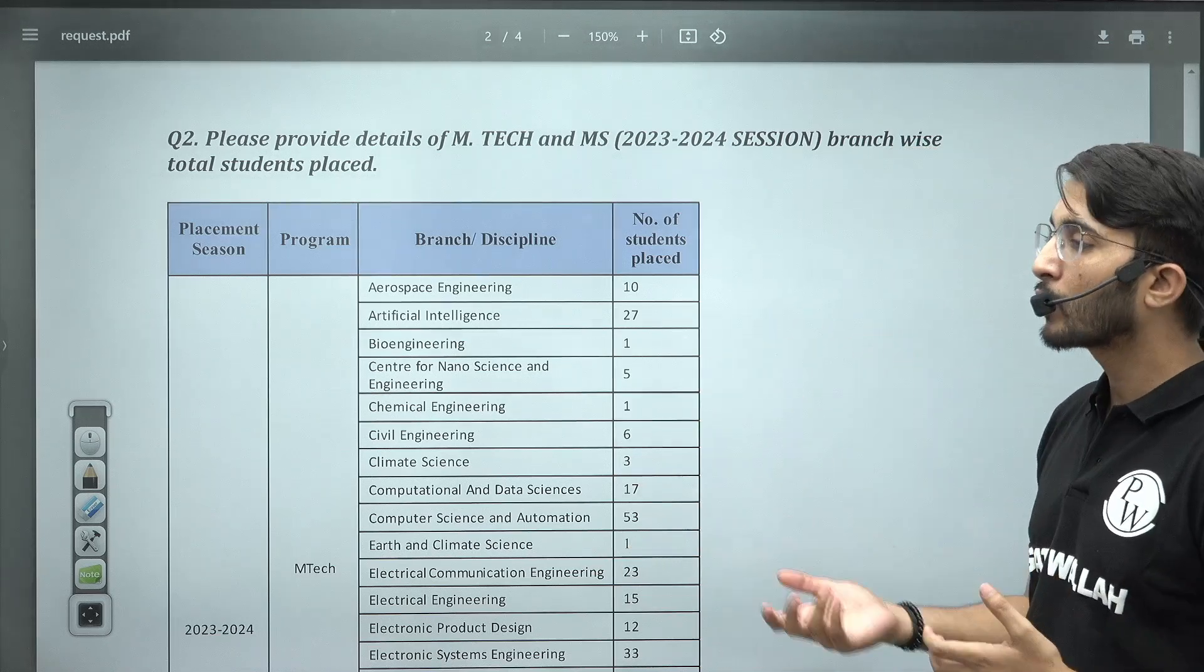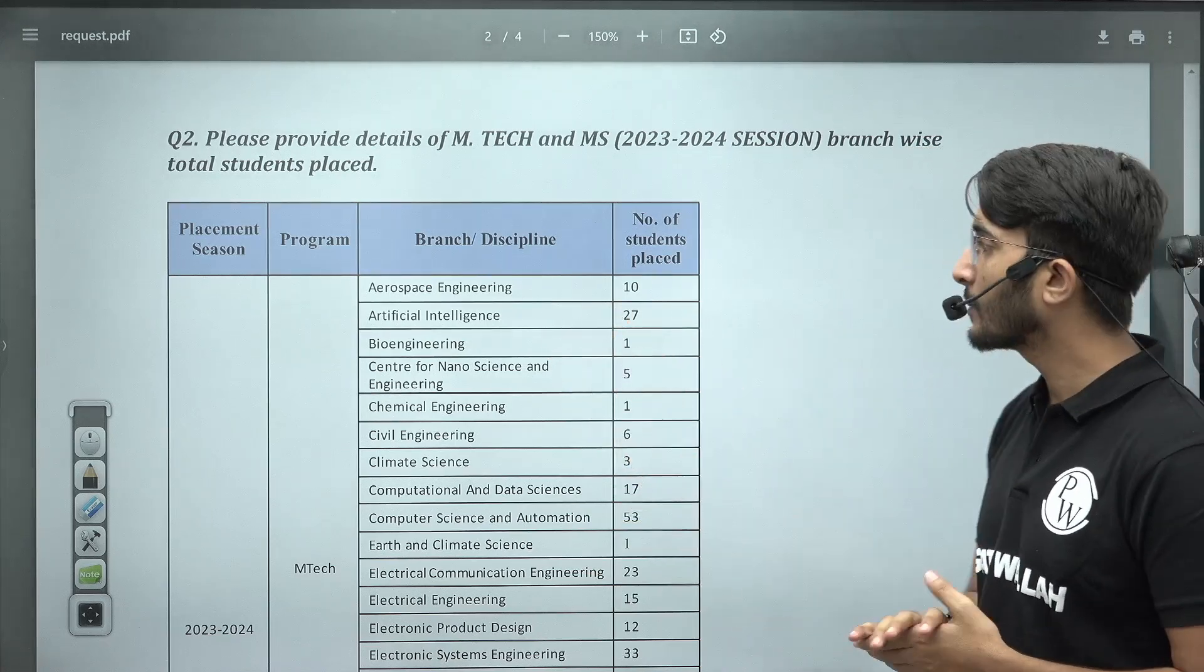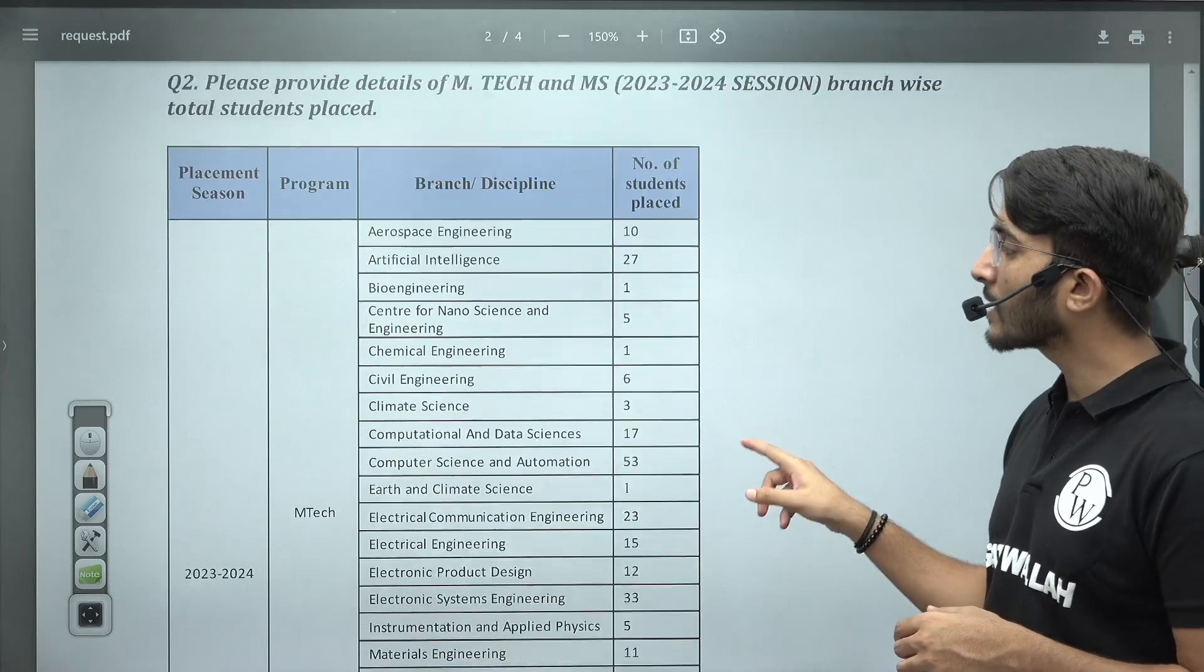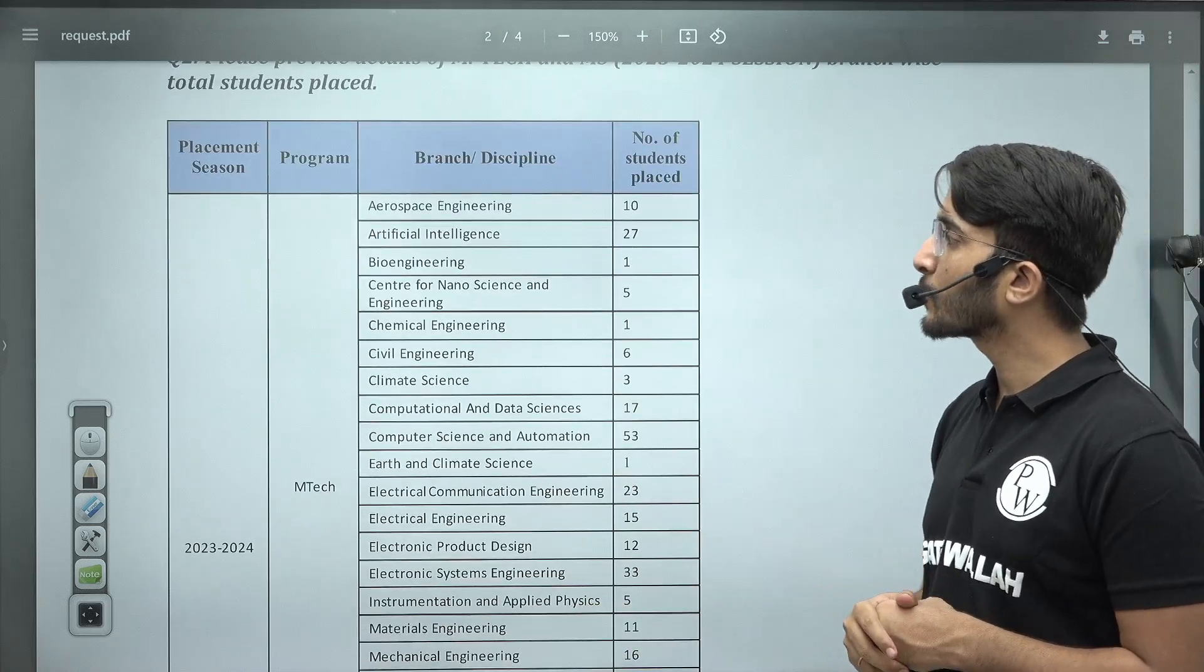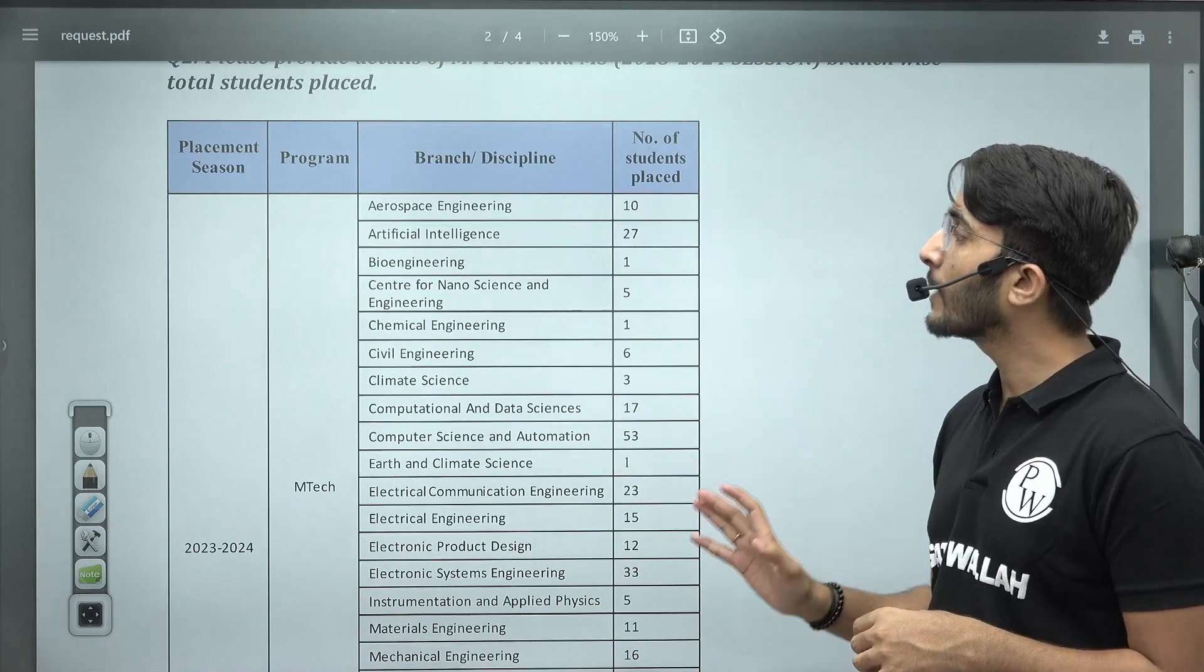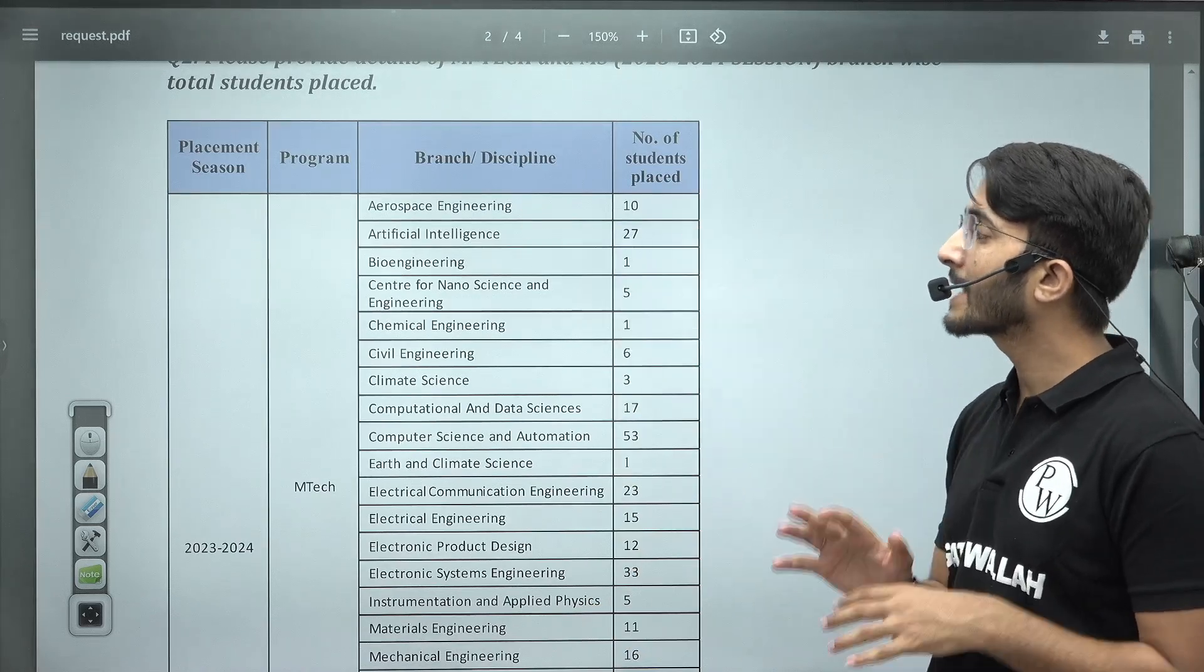And guys, in this particular answer they provided the number of students placed. So for Aerospace Engineering, 10 students placed, Artificial Intelligence 27 students placed.